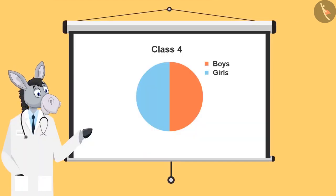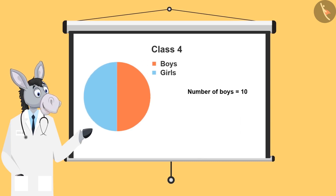Now, all of you, look at this chart. And think, if there are half boys and half girls in a class, and the number of boys is 10, then what will be the number of girls?